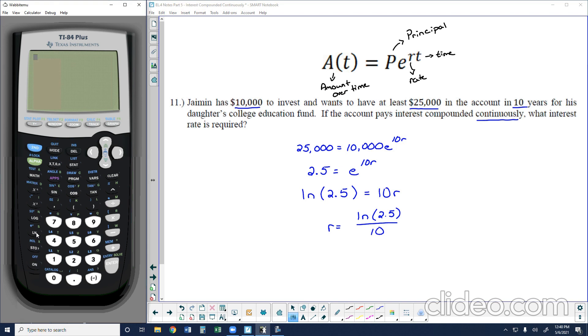So if I round this answer in my calculator, I can evaluate it. The natural log of 2.5 divided by 10, I can get that R is approximately 0.0916. I'll take this out to four decimals because as we convert this into percentage, 9.16% interest is required.